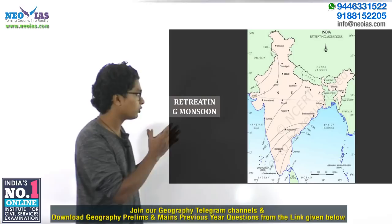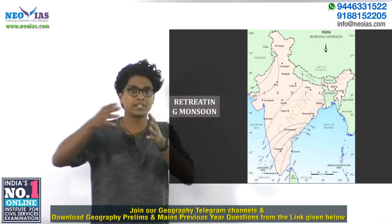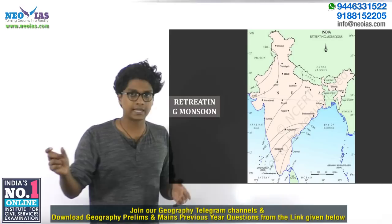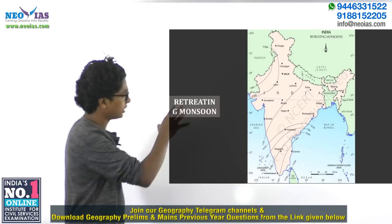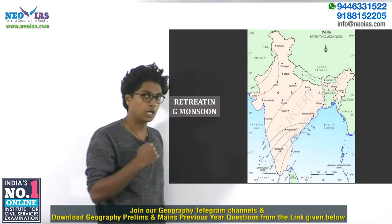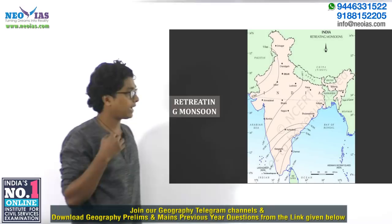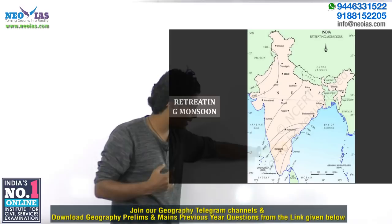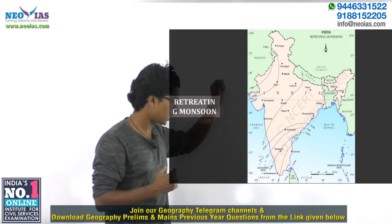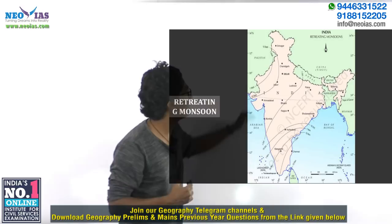The duration of the monsoon means the time between onset and retreat. The place where the duration is least is western Rajasthan, because onset was made last and retreat started from there. The duration of the monsoon is least in the north-western regions and increases as we go towards the south, because in the south onset was made earlier and retreat took place at a later stage.